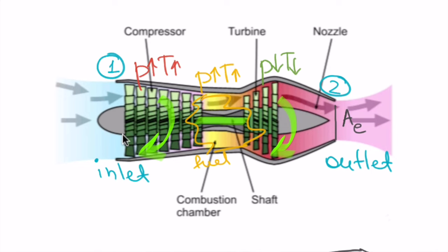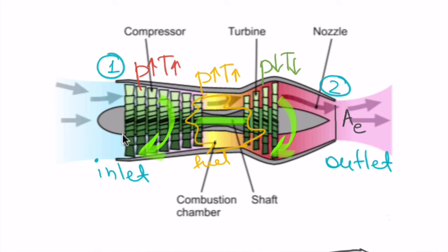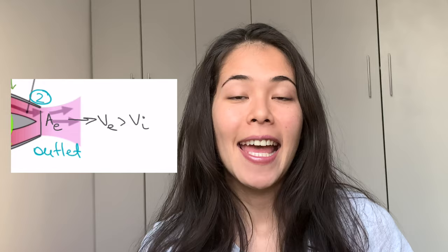Remember from Bernoulli's principle that when the fluid or a gas goes through a region with lower area, smaller area, then the velocity of that fluid increases. So the air that exits the engine has a higher velocity than the air entering the engine. So the engine acts like an accelerator. And this change in velocity means that we change the momentum of the air. It means that we create an outside force which we'll later call thrust.